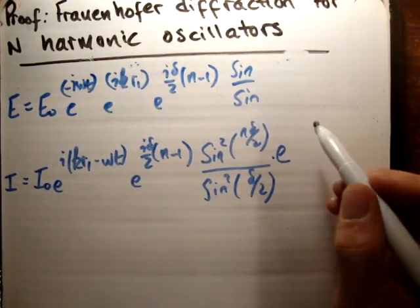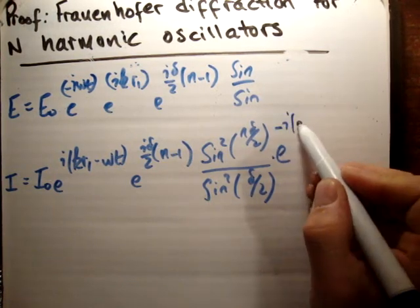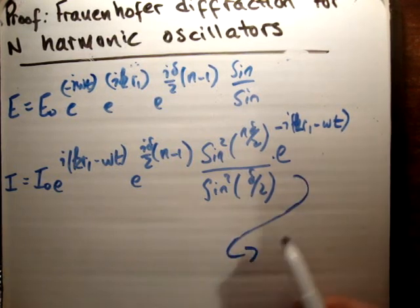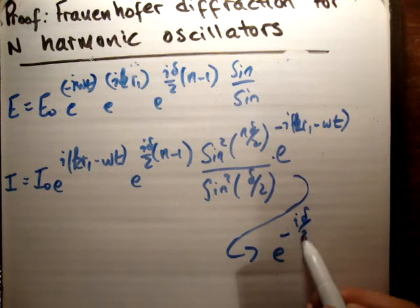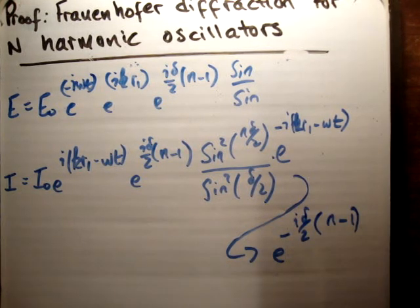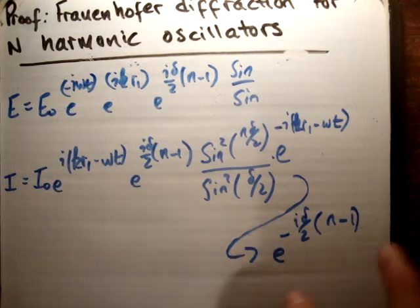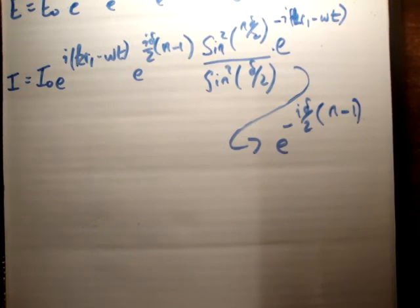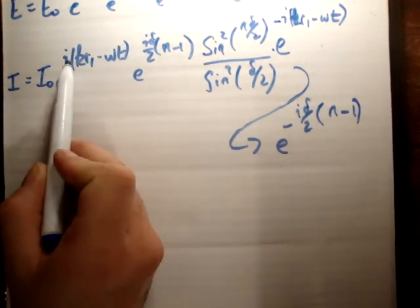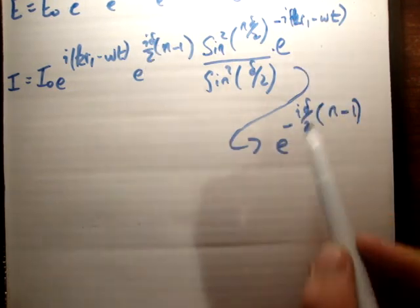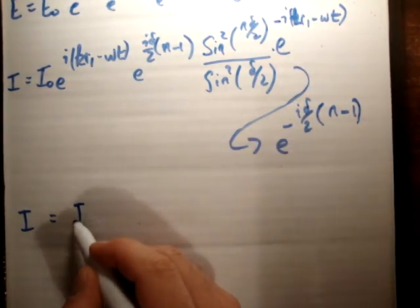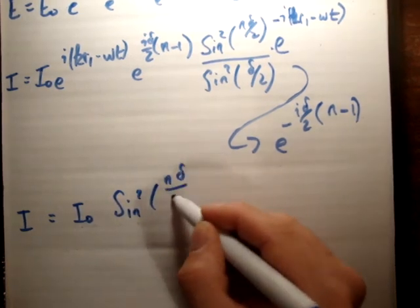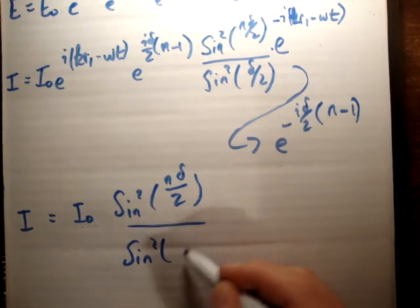We need to multiply by the conjugate factors: e to the negative i times (kr1 minus ωt), and e to the negative iδ/2 times (n minus 1). Those are the square components. Because there's a positive iota and a negative iota in each pair, they cancel, and we get: i equals i0 times sine squared of nδ/2, divided by sine squared of δ/2.